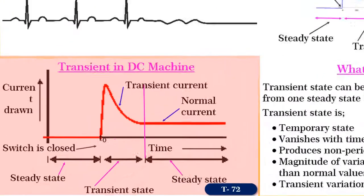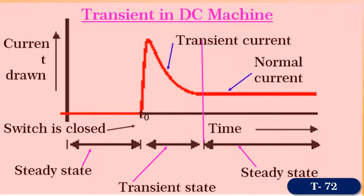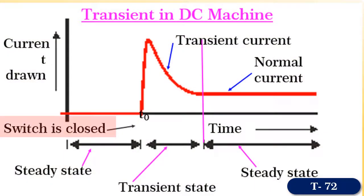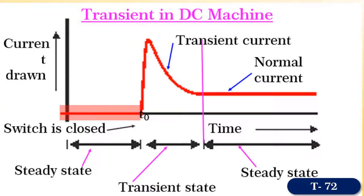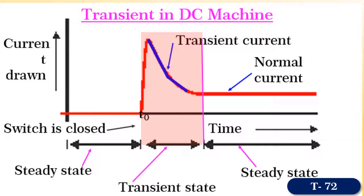Consider the waveform of current drawn by a DC motor when it is started at t equal to 0 by applying the supply. During the first state, the motor is at rest and the current drawn is 0. After the power supply is switched at t equal to 0, you see that the current drawn increases suddenly and it takes some time to decrease during the transient state. After some time, the motor draws normal no-load or load current, as the case may be.